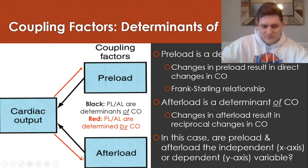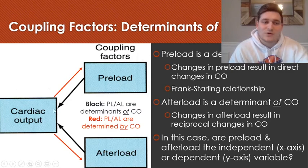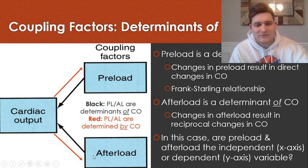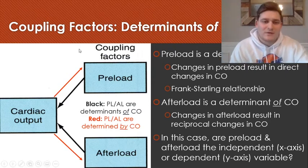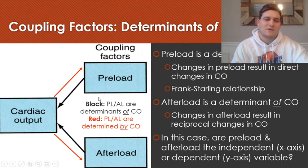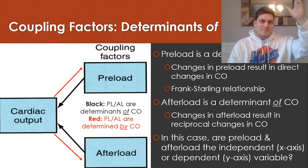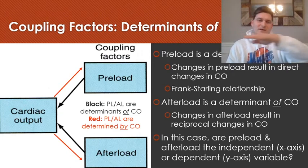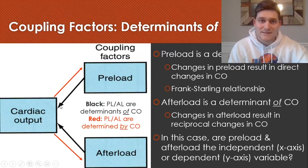Afterload has an inverse relationship: if aortic pressure and therefore afterload increases, that is going to decrease stroke volume and cardiac output. However, if arterial pressure and aortic pressure decrease, that allows cardiac output to increase. On a graph, preload and afterload are the independent variables on the x-axis, with changes in these two variables bringing about changes in cardiac output as the dependent variable on the y-axis.